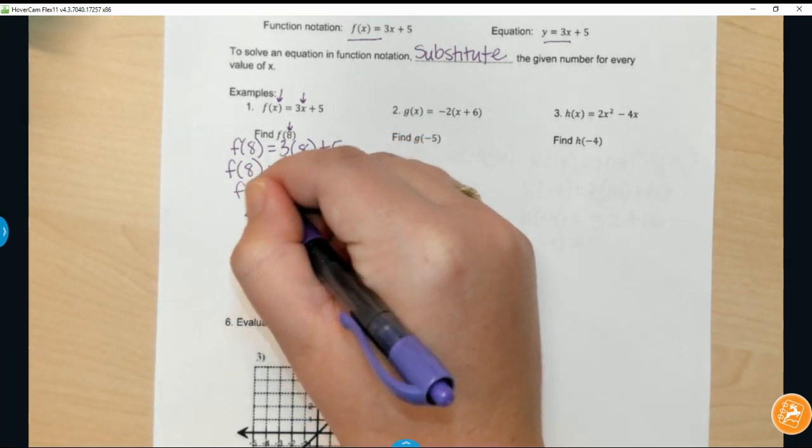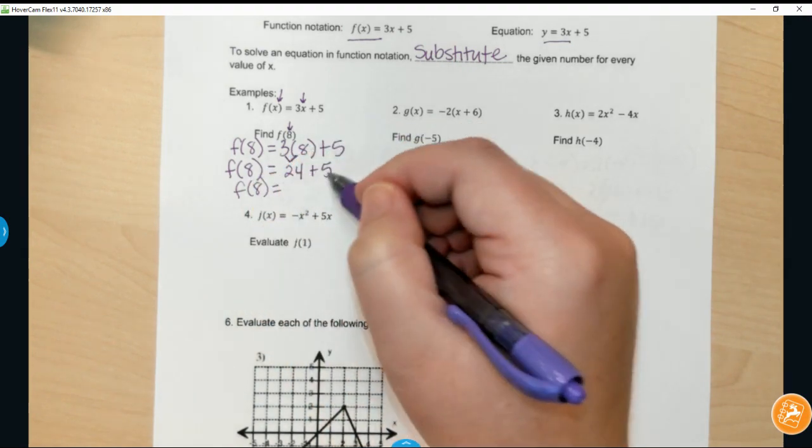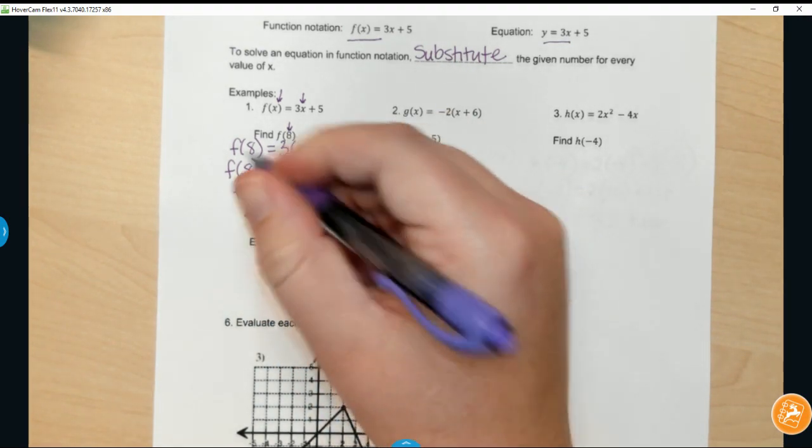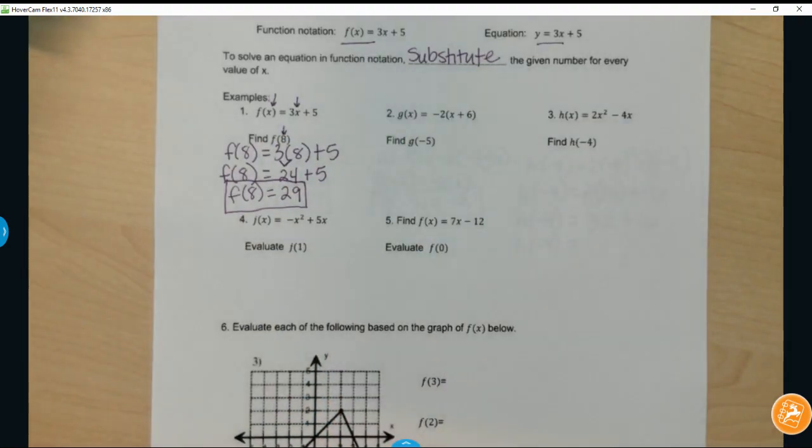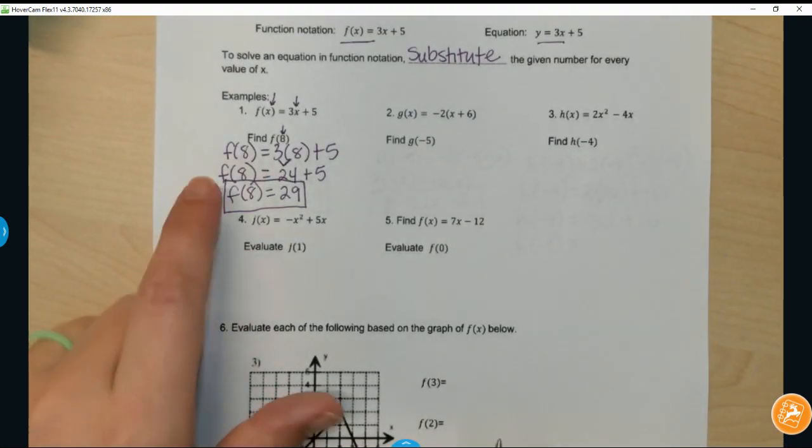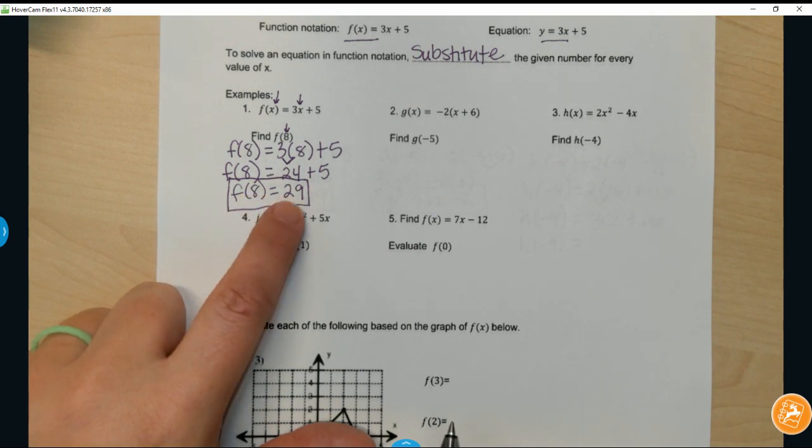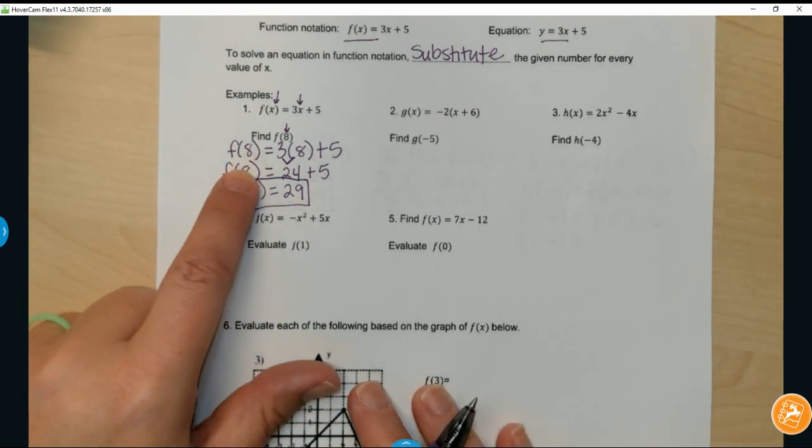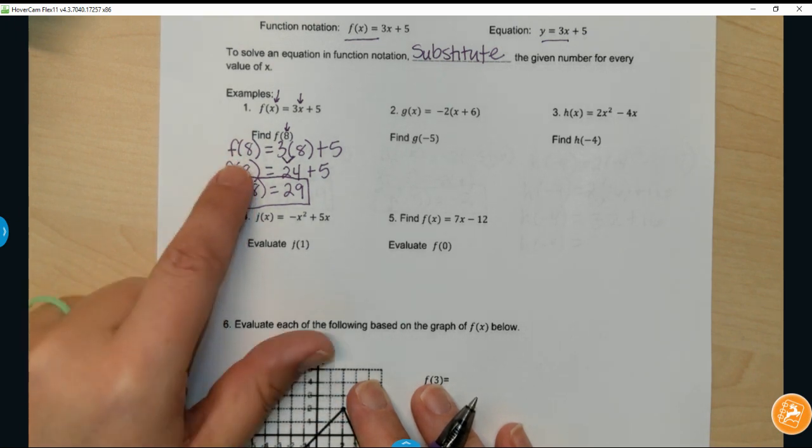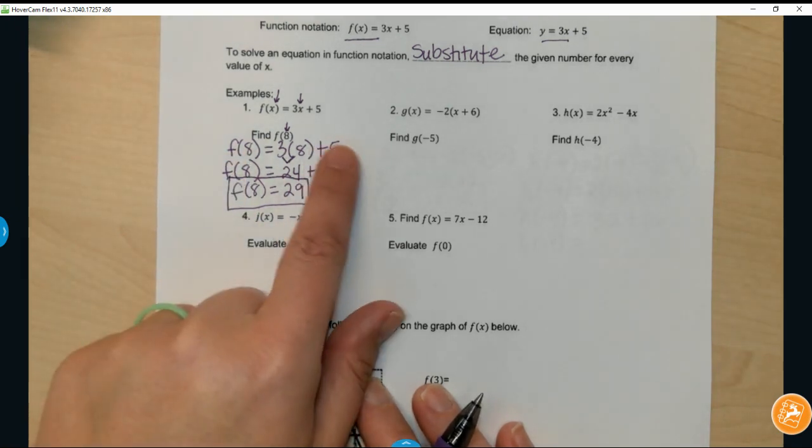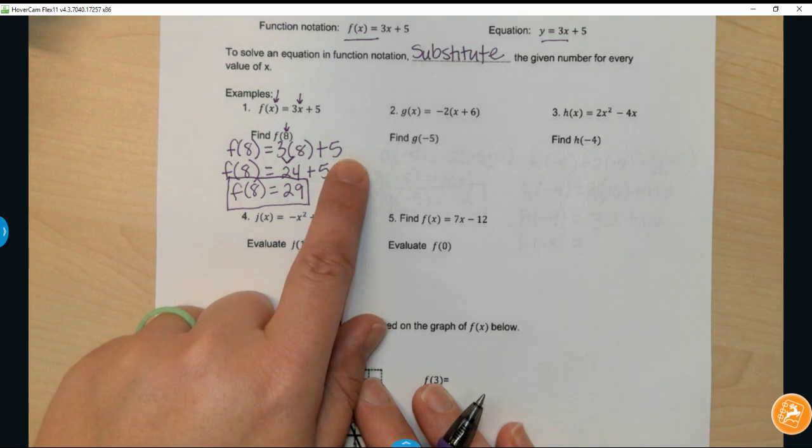Bring it down, 24 plus 5 will give us 29. So that is saying that if you plug in 8, you will get out 29. f(8) equals 29. Notice I did no math work over here, no solving, no simplifying. That is just the name. Everything, all the action, happens over here on the right hand side.